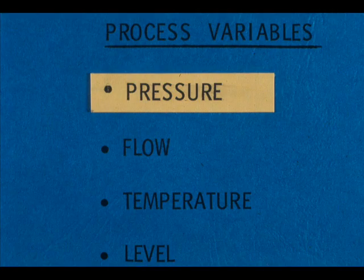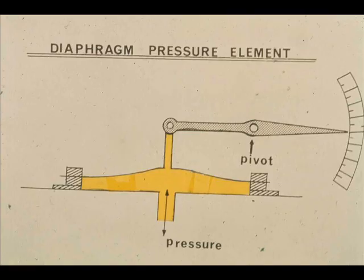Suppose we look first at sensing devices used for measuring pressure. Perhaps the simplest pressure-sensing device is the flexible diaphragm. The diaphragm is subjected to different pressures on each side. The difference in pressures causes the diaphragm to move, which causes a movement of the linkage and a change in the pointer position.